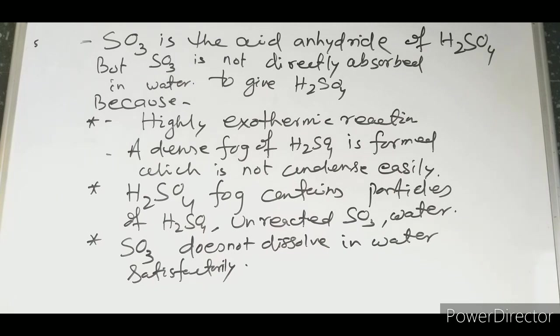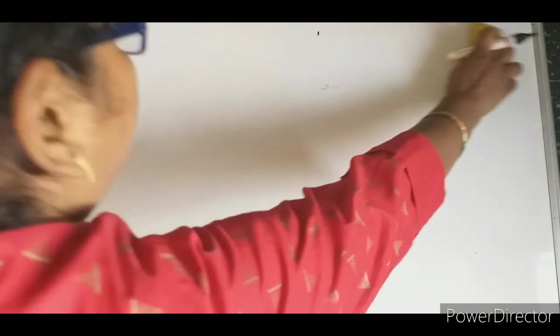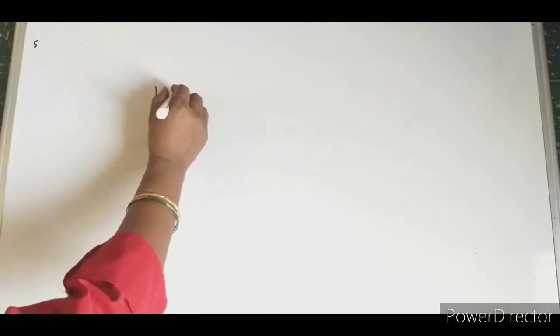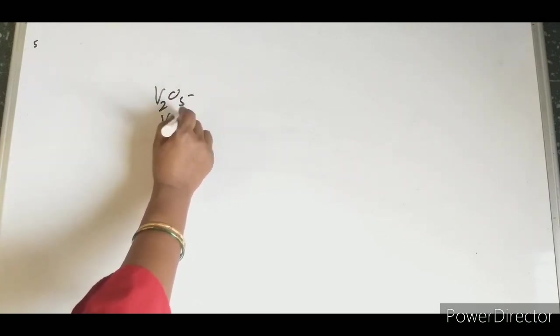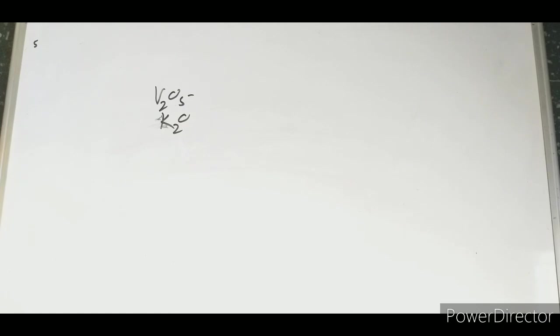Along with vanadium pentoxide, some promoter can also be used to drive the forward reaction. A small percentage of K2O — potassium oxide — can also be taken so that the forward reaction proceeds efficiently. This is all about the preparation of sulfuric acid by the Contact Process.